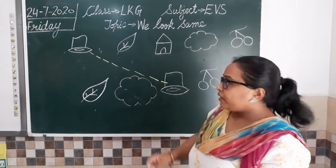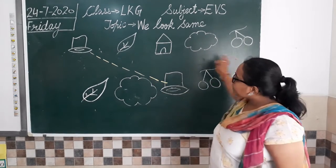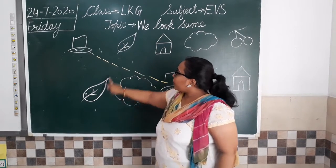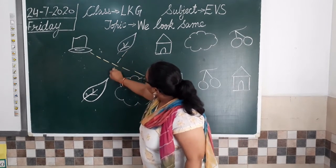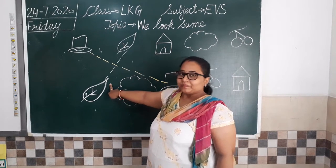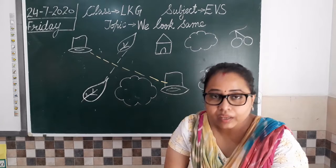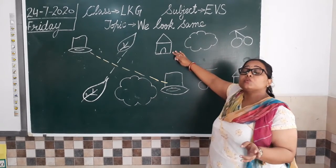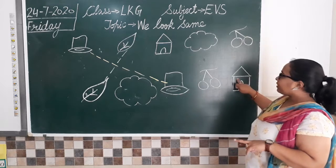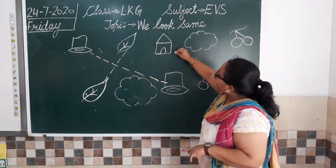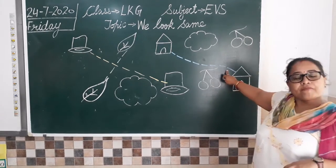Now going to the next one — next we have is leaf. Let's search a leaf here in the one below. We got a leaf. Now we are going to match these two — I have another color chalk and I am going to match this leaf with this leaf. Now we have a hat here. This hat needs to be matched with another hat. Let us search the hat — leaf, cloud, hat, cherries, hat. So we got the hat also. I have taken a different color and I am matching hat with hat like this. So we have matched it.